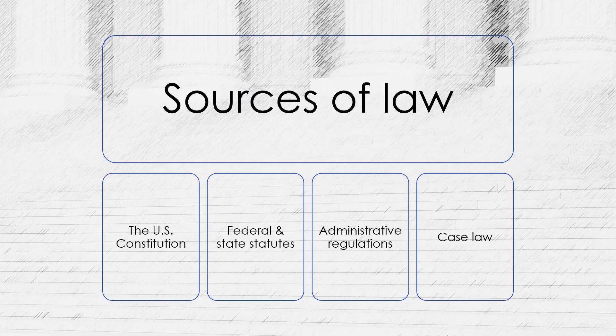It is worth noting that these four sources of law are not mutually exclusive. Instead, they interact and overlap with one another, working in conjunction to create a robust set of legal guidance. The United States Constitution is the most fundamental source of law. Federal statutes, state statutes, administrative regulations, and judicial opinions must all comply with the Constitution's rules.